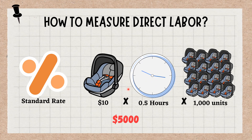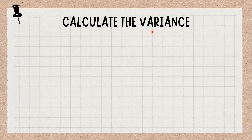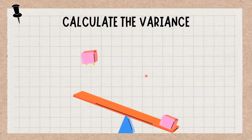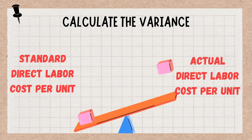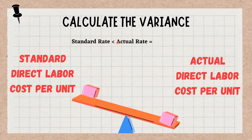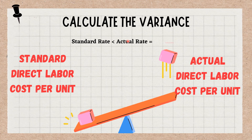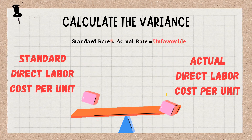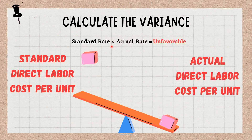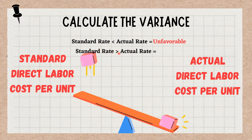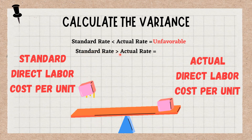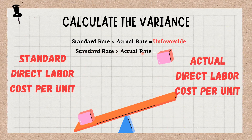Calculate the variance between the standard and actual labor cost. The variance is obtained by calculating the difference between the direct labor standard cost per unit and the actual direct labor cost per unit. If the actual direct labor cost per unit is higher than the standard, it means the company incurs more to produce one unit than expected, making the cost unfavorable. If the actual direct labor cost is lower, it costs less to produce one unit than the standard rate, and therefore it is favorable.